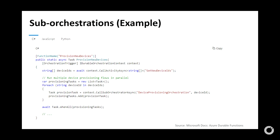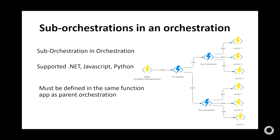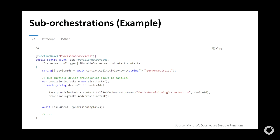The key method is `CallSubOrchestratorAsync` through the orchestration context — that's how you call a sub-orchestrator. This is a simple example; you can call as many sub-orchestrations through the context as needed.